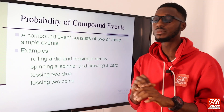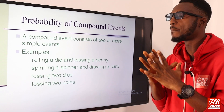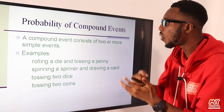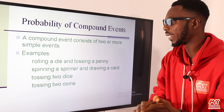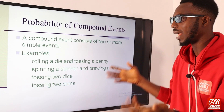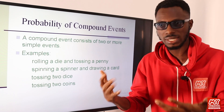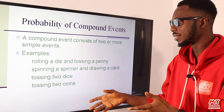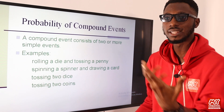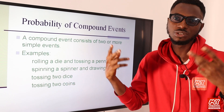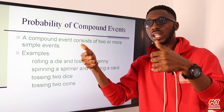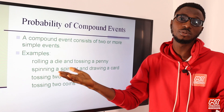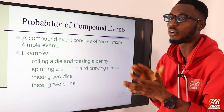A compound event consists of two or more simple events. For example, rolling a die and tossing a penny — you can see we have more than one outcome. Spinning a spinner and drawing a card — you are doing two things at a time, so it is very possible you get more than one outcome. Also, tossing two dice: if I get a 3 from one and a 3 from the other, I have gotten at least two outcomes. Tossing two coins: I can get head and tail, tail and head, head and head, or tail and tail — more than one outcome, so it is definitely a compound event.